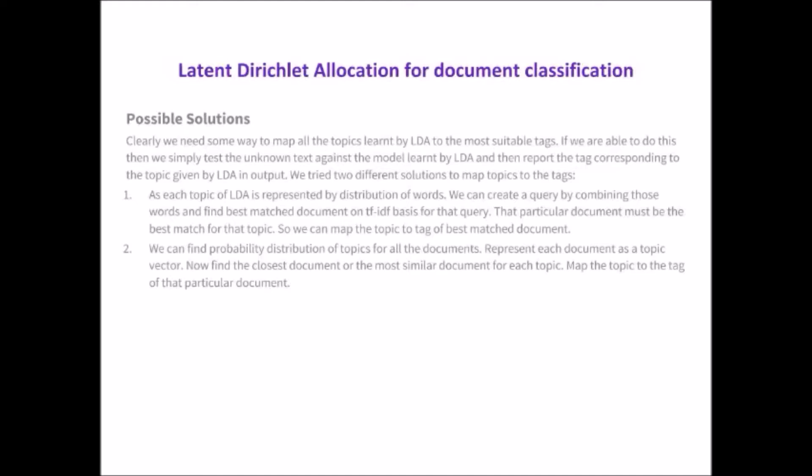Second solution can be to represent each document as a topic vector. For every topic find the most similar document in this topic space and map the topic to the tag of that document.